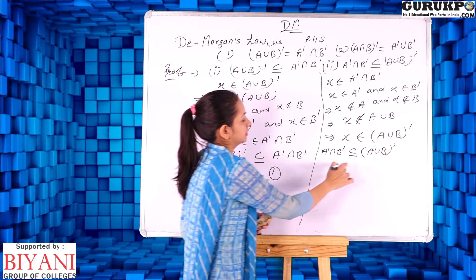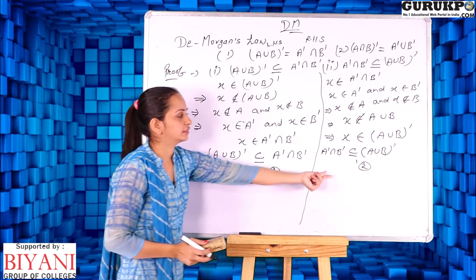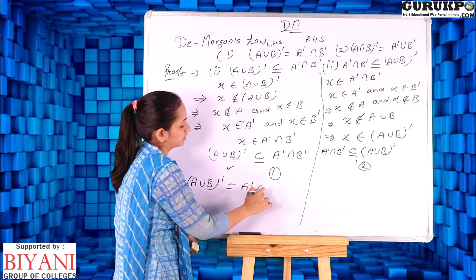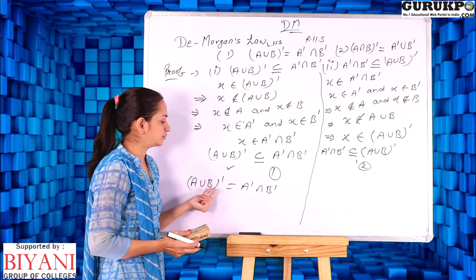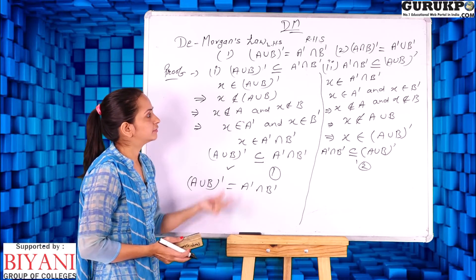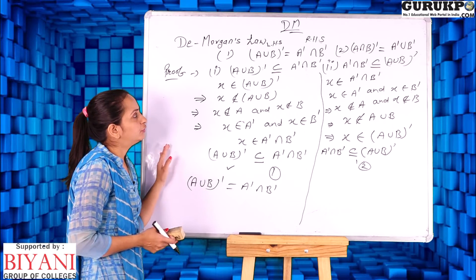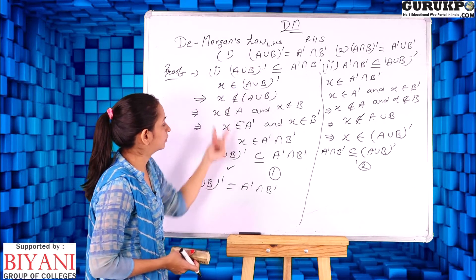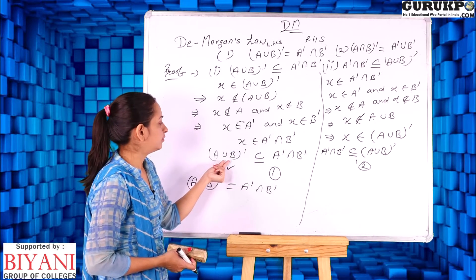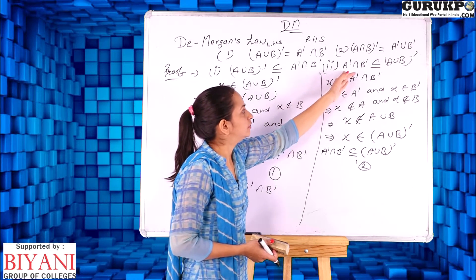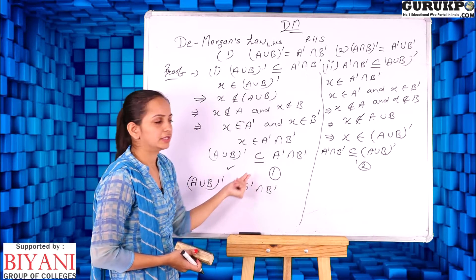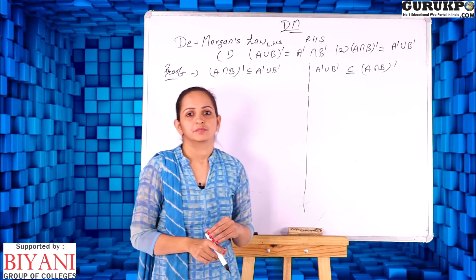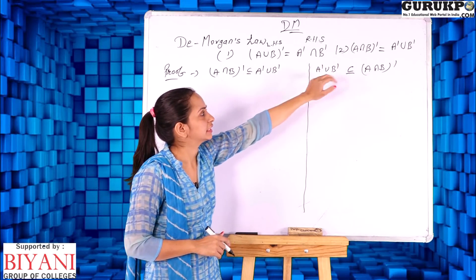So this is my first statement proved and this is my second statement proved. By these two statements, I can conclude that (A∪B)' is equal to A'∩B', because this set is a subset of that and that set is a subset of this — meaning the two sets are equal. This is how we prove De Morgan's first identity: we take an element from the left hand side and show it belongs to the right hand side, and vice versa.